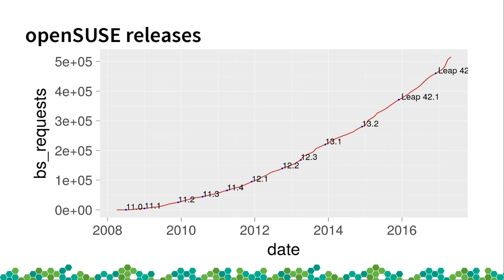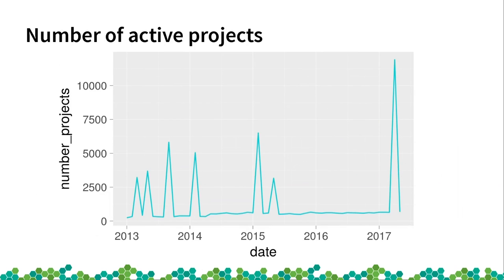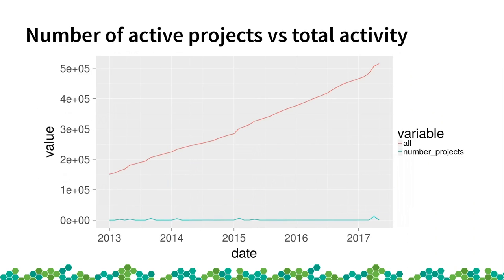What can that be? I found the number of active projects — small, medium, and also big ones — the number of projects that are active even if they are really small. Painting it with the total activity, you can already see that more or less where there are peaks in one of them, there are peaks in the other.